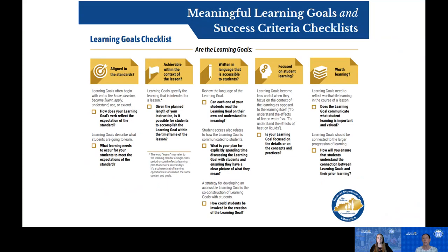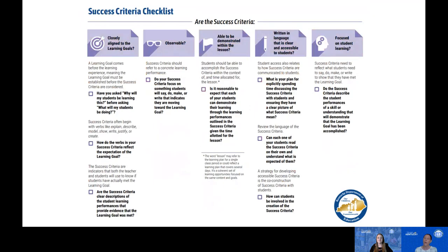The first page of the checklist is focused on developing learning goals. Across the top are guiding questions that correspond to the characteristics from the module, and underneath each one you will see additional considerations to help you think through and apply them to the learning goals you are creating. A similar format appears on the second page for the success criteria checklist — guiding questions along the top matching the module's characteristics, with additional considerations underneath.